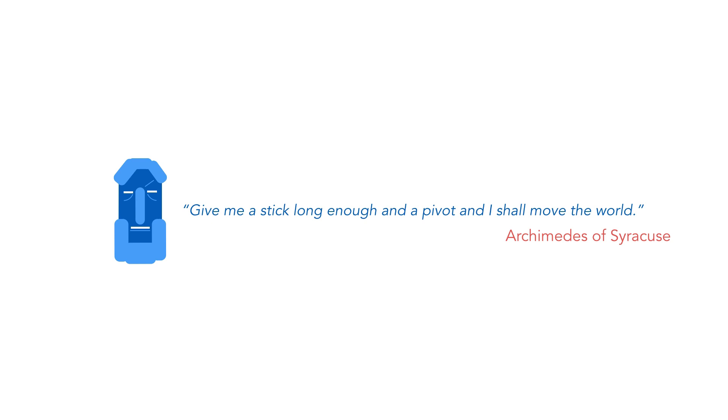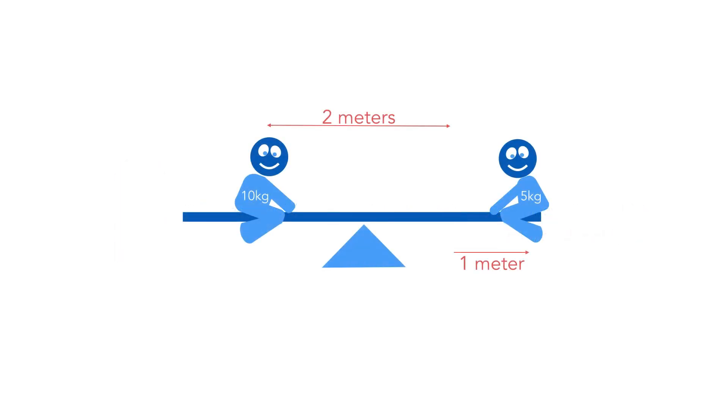Mathematically, a moment is defined as force multiplied by the arm. Going back to our seesaw analogy, we can prove that the lighter child is able to balance the heavier child by using a longer arm to achieve the same moment of force.